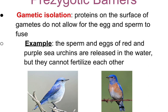Gametic isolation occurs when proteins on the surface of some gametes don't allow an egg and sperm to fuse. A good example is the sperm and egg of red and purple sea urchins. When they are released into the water, they cannot fertilize each other even though the sea urchins are very closely related and their reproductive pattern is the same. There is still a protein tag on the surface that accounts for that specific sperm from that species to fertilize.